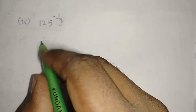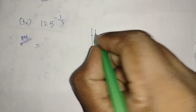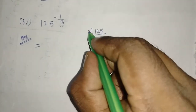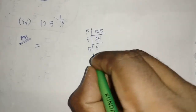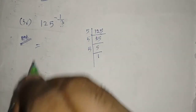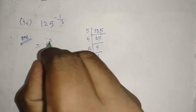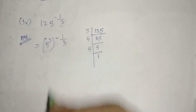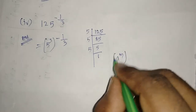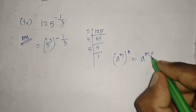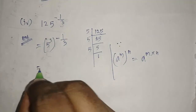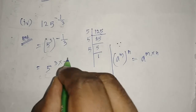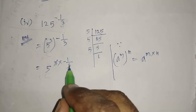Now the fourth question: 125 whole power minus 1 by 3. We will use prime factorization since 125 is not a perfect square. Taking factor 5: 5 times 25, again 5 times 5, again 5 times 1 — totally 1, 2, 3 fives, so 125 equals 5 cubed. This becomes 5 power 3 whole power minus 1 by 3. Using the formula a power m whole power n equals a power m into n, with m as 3 and n as minus 1 by 3, I get 5 power 3 into minus 1 by 3.